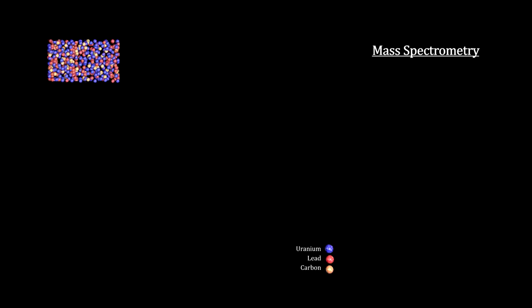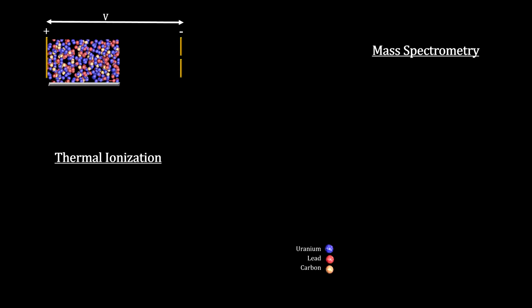The first step is to take a small liquid sample, a nanogram or so, and convert it into an ionized gas in a vacuum. This step is called thermal ionization.